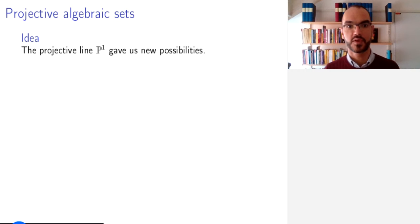The idea is that the projective line that we defined last time by gluing together two affine lines, go back to the construction if you don't remember it, was a useful construction and gave us new possibilities to define what could be meant by compact spaces and so on.